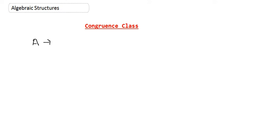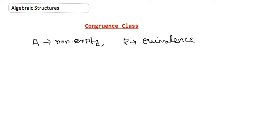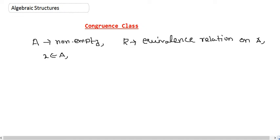Here is the definition. Suppose A is a non-empty set, and R is an equivalence relation — which is basically a reflexive, symmetric, and transitive relation — on A. Then if we have an element, suppose x belongs to A, then we define the equivalence class of x.